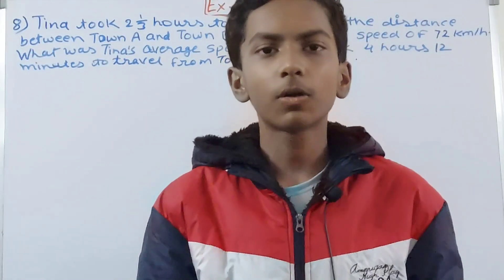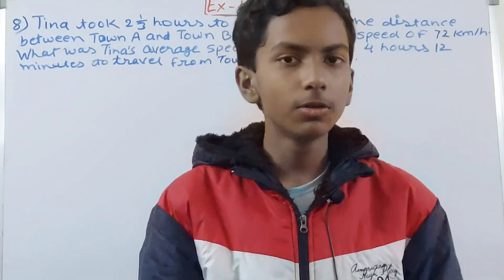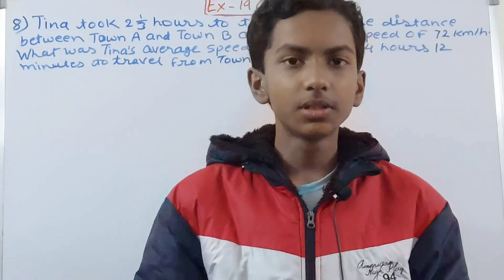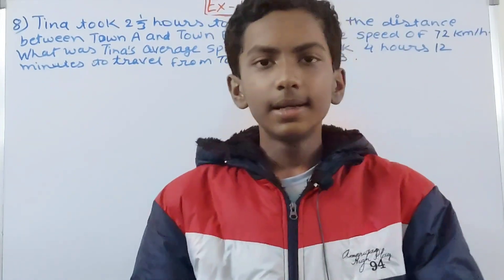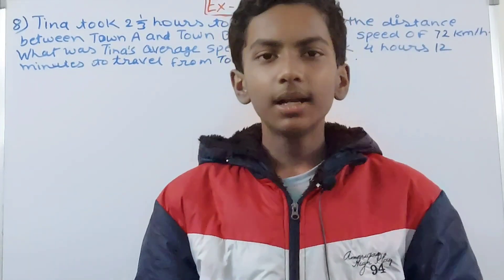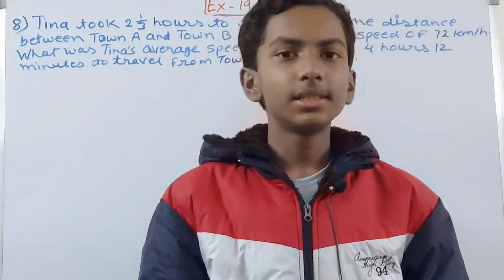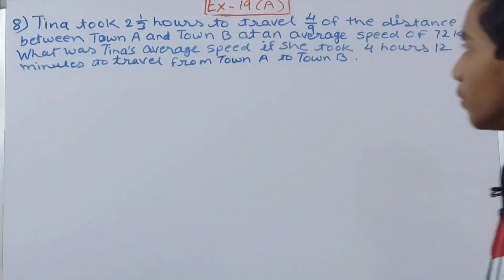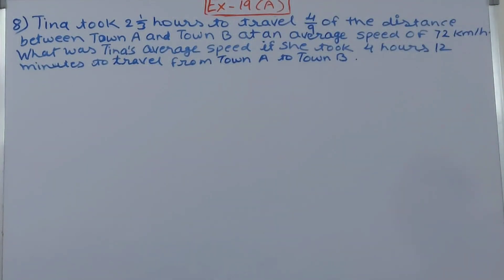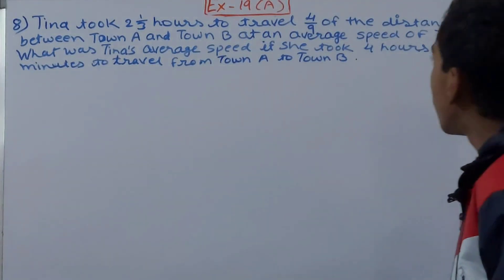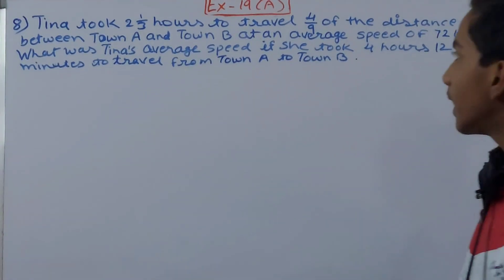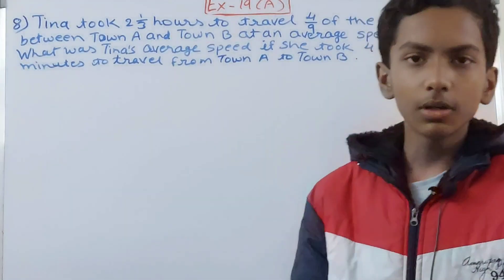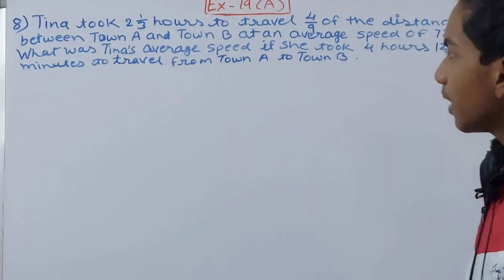Welcome back to my YouTube channel. In this video we are going to solve ICC Mathematics Class 7 Chapter 19, Speed Time and Distance, Exercise 19A Question 8. It is: Tina took 2 and 1/3 hours to travel 4/9 of the distance between Town A and Town B at an average speed of 72 kilometers per hour.